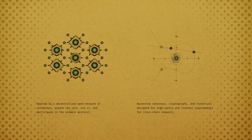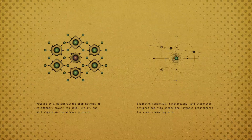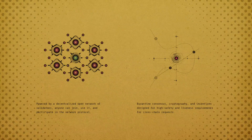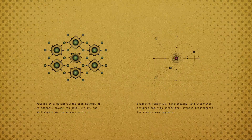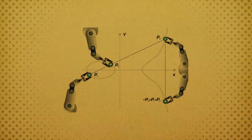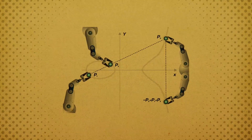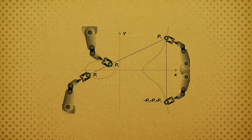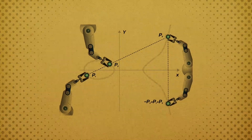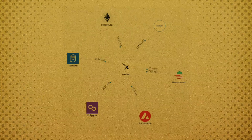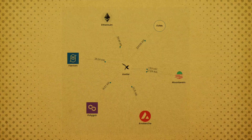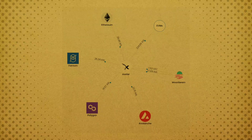Powered by a decentralized open network of validators, anyone can join the network, use it, and build on it. Moreover, this system is decentralized and secure. In simple terms, we have something like an oracle for writing and reading information between different blockchains.